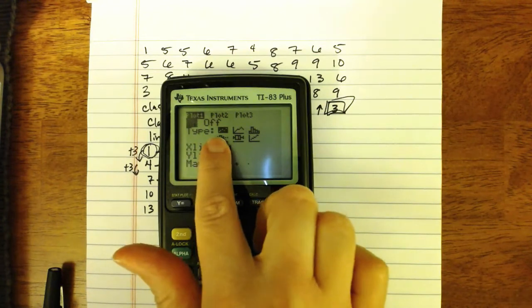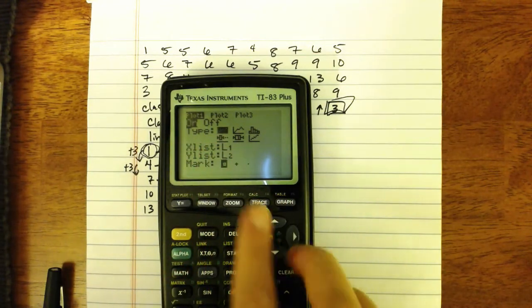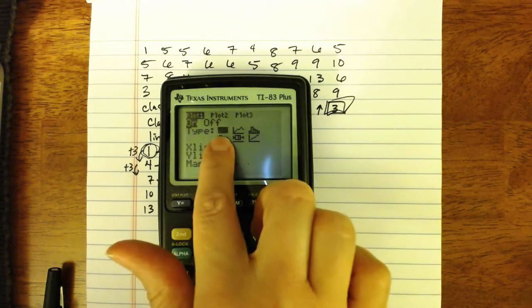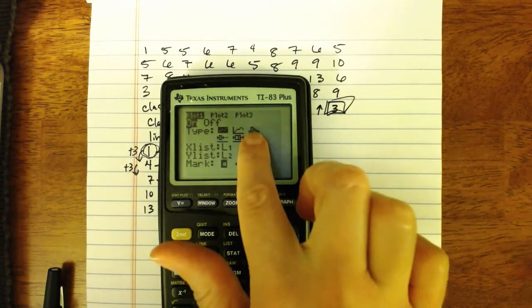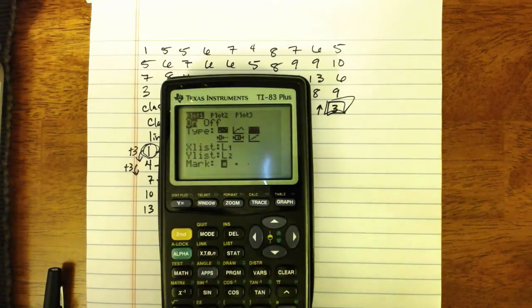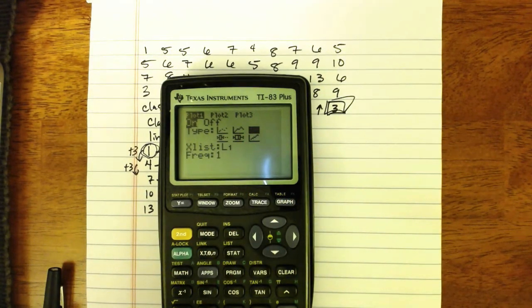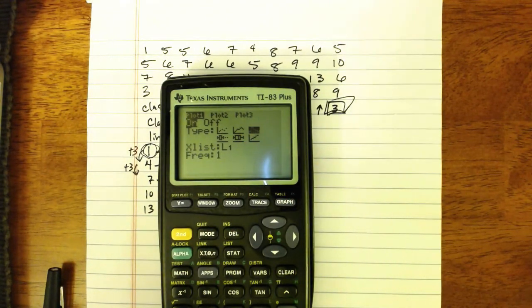Make sure that the word on is highlighted rather than off. Under type, if we're making a histogram, you want to use the down arrow key to drop down to type, and then the right arrow key twice to navigate over to the histogram icon and press enter to select it. So now we'll be making a histogram.